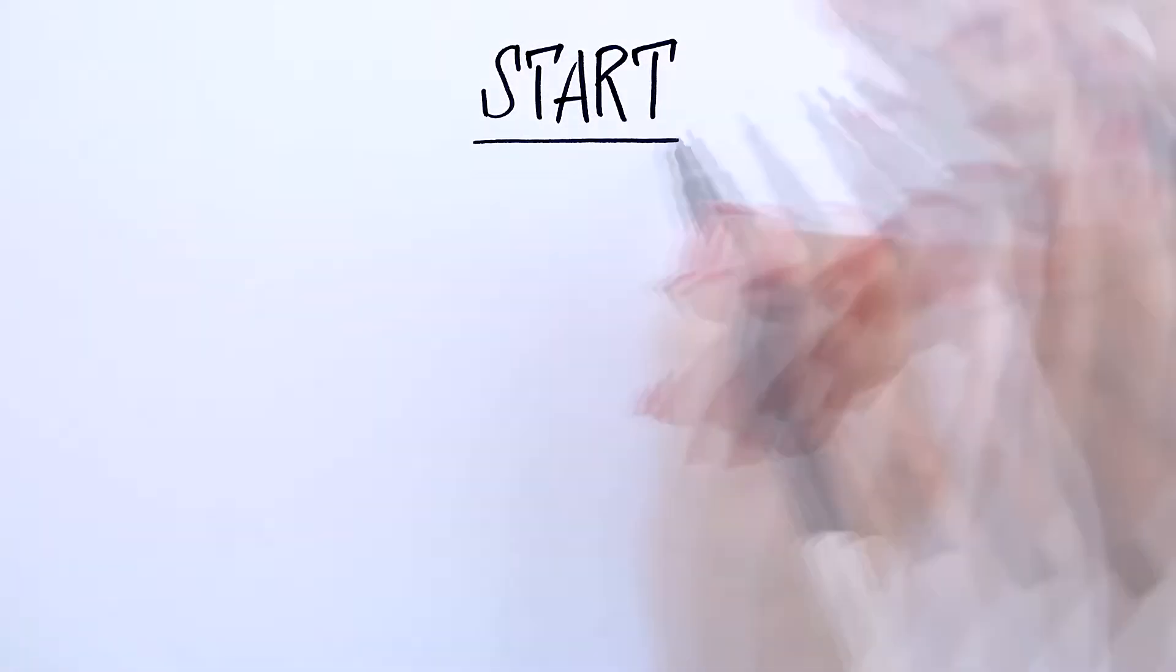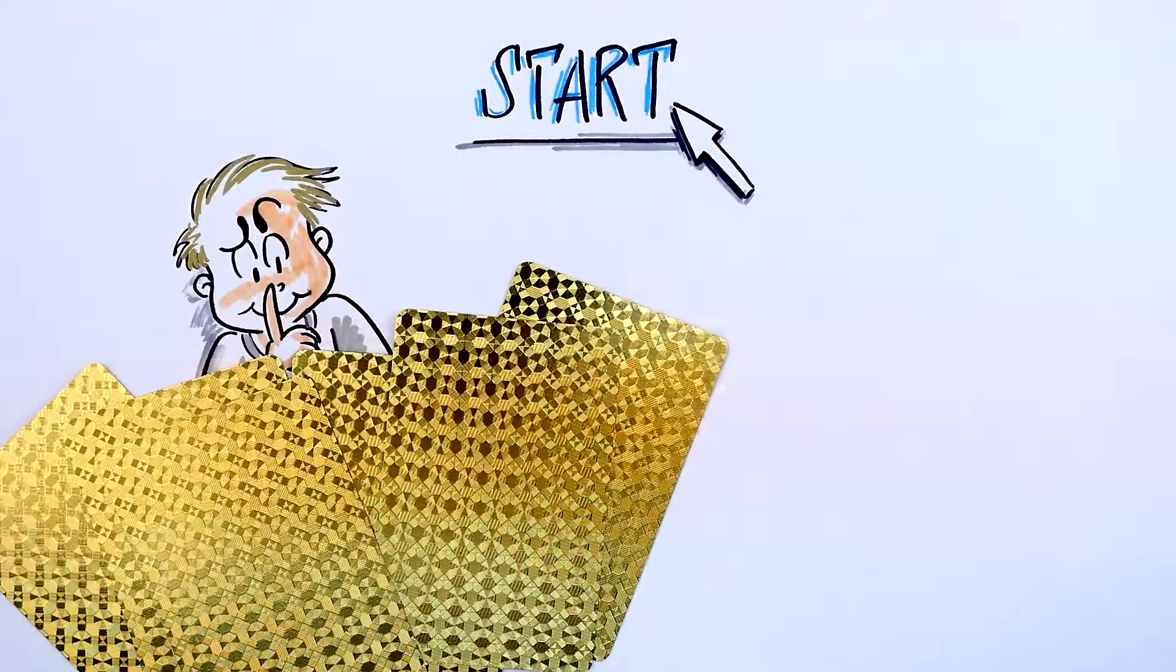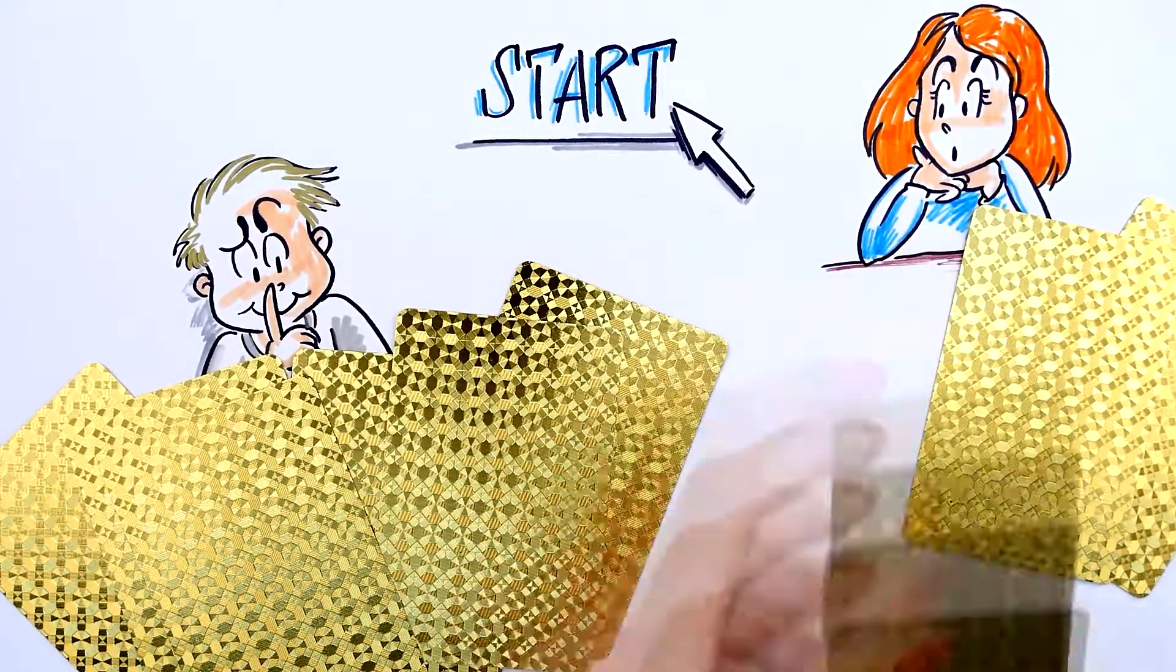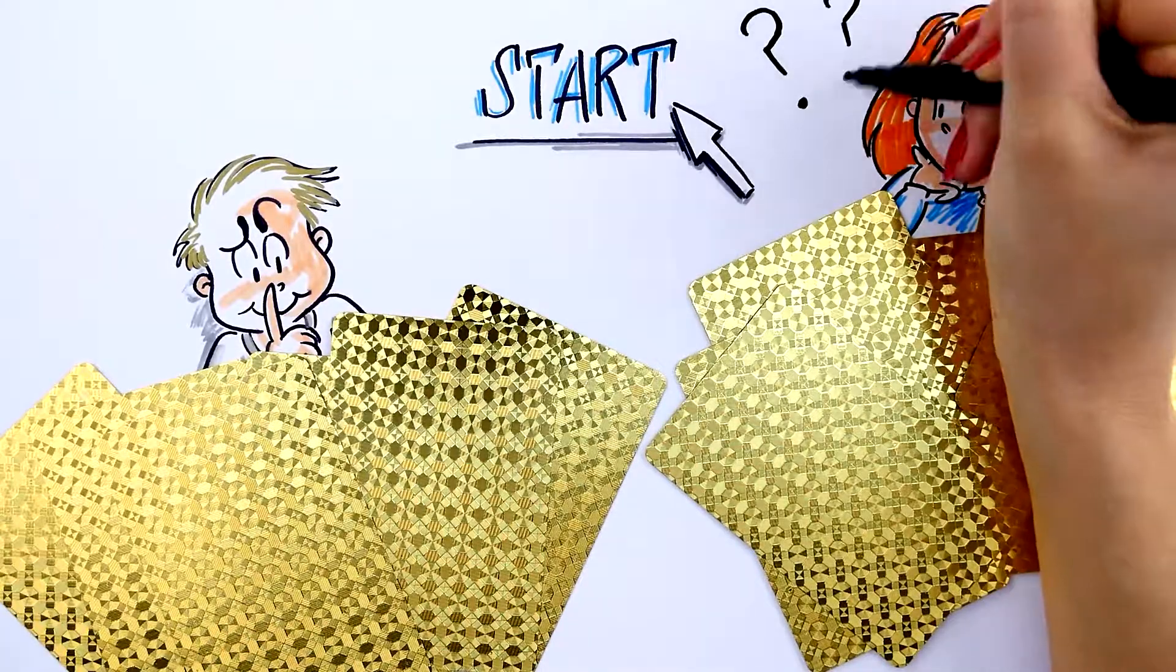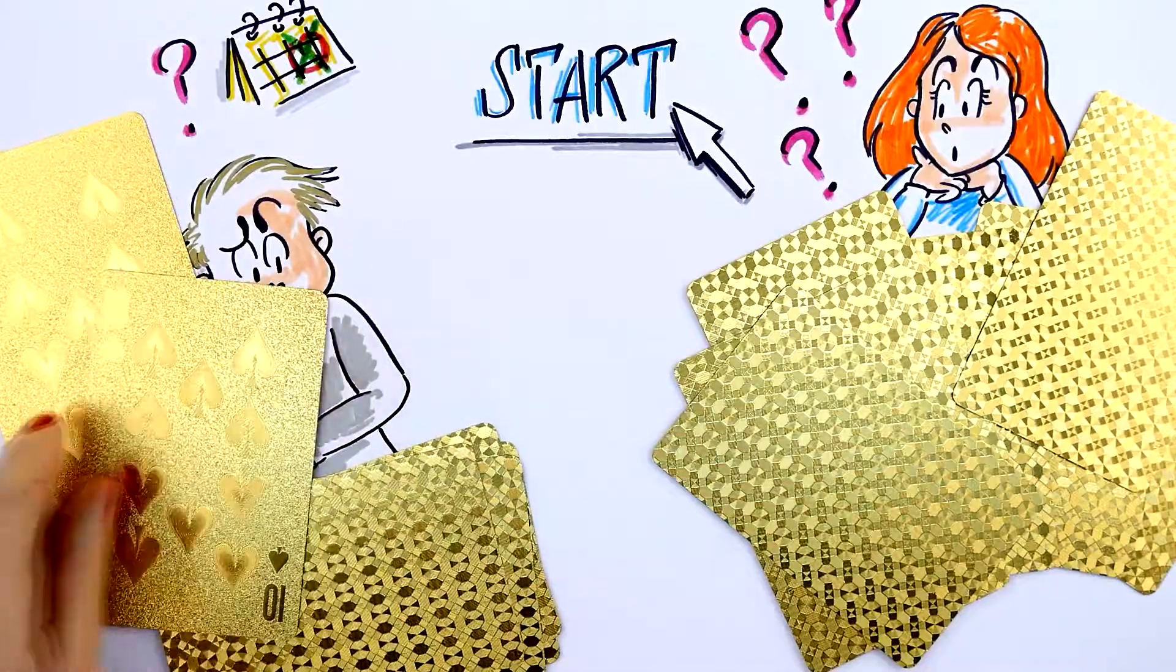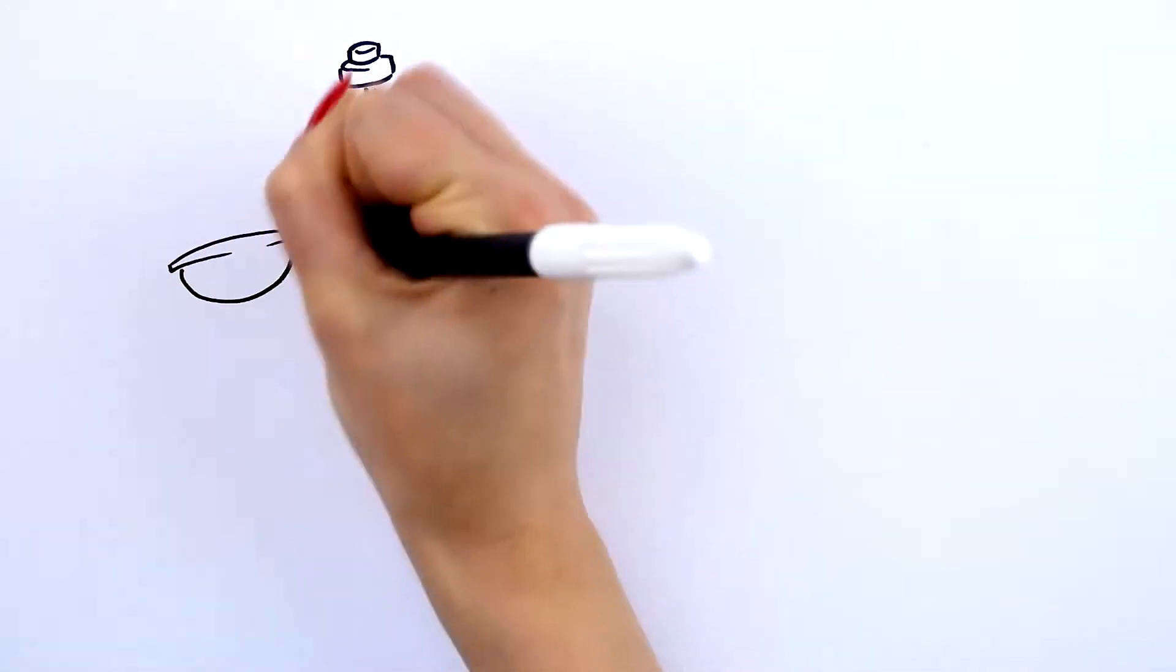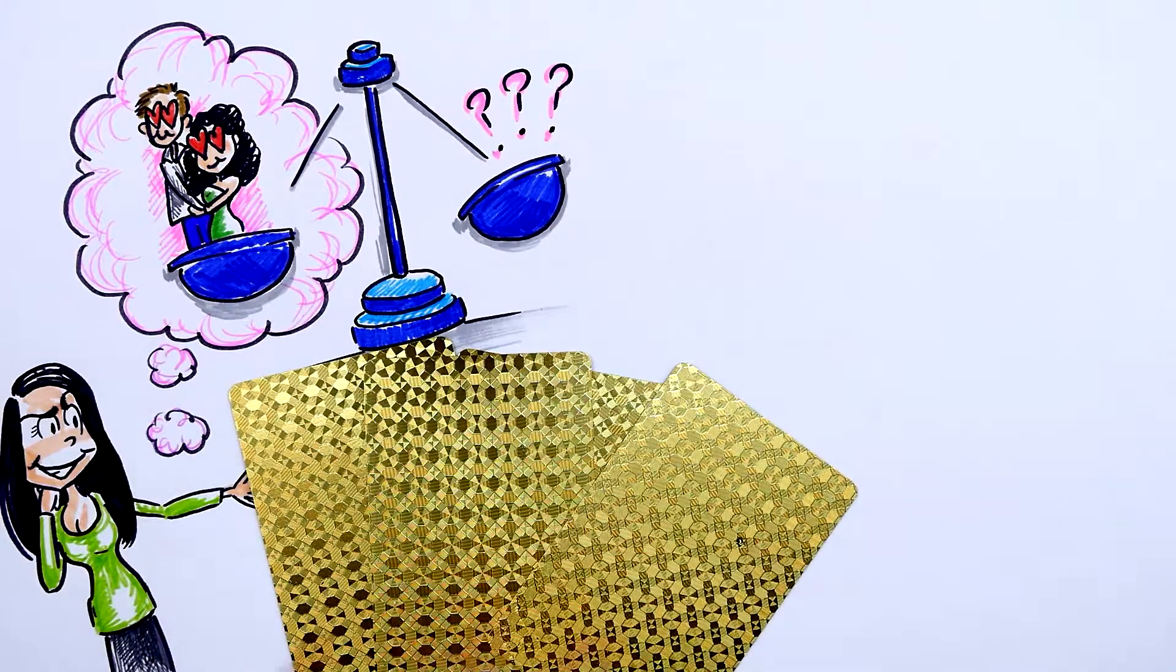When you meet someone, it is good not to show your intentions from the very beginning so that the other person is not sure what you want from them, regardless of whether you are a man or a woman. In this very initial phase of acquaintance, after each meeting the other person should be uncertain about what you feel. They should be wondering: will you still want to meet? Do you care, or maybe not so much? The key is to find a balance between actions that develop your relationship and not revealing all your cards at the very beginning.